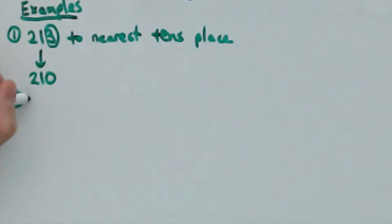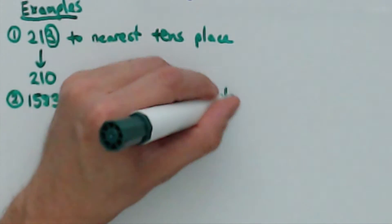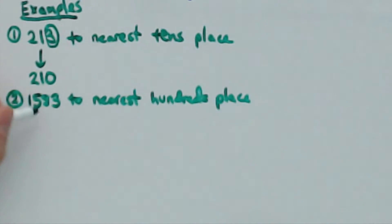Number 2 says to round 1583 to the nearest hundreds place. You need to look at the number directly to the right of the hundreds place, which is the tens place. The number is 8, and since 8 is greater than 4, the number needs to be rounded to 1,600.